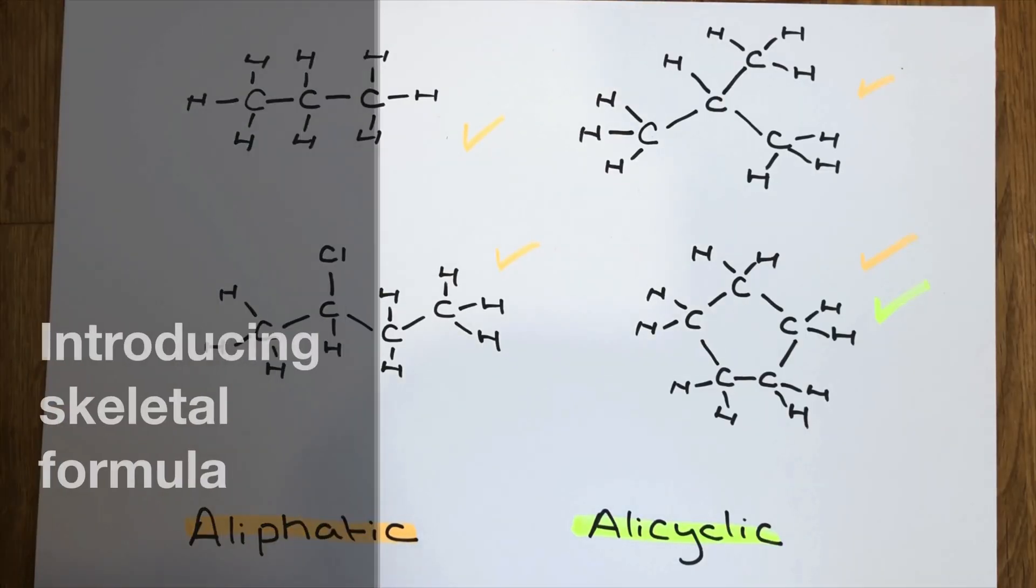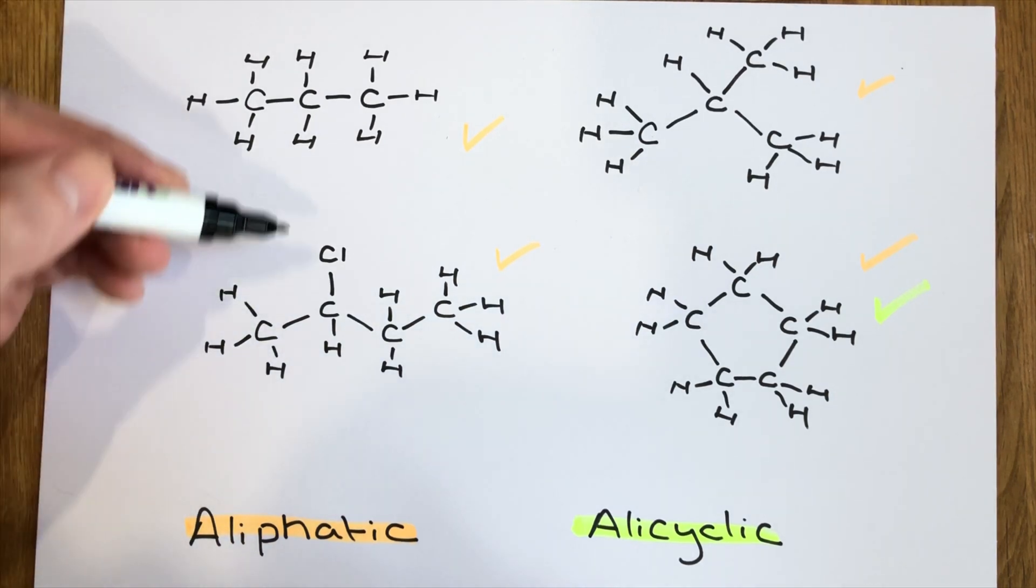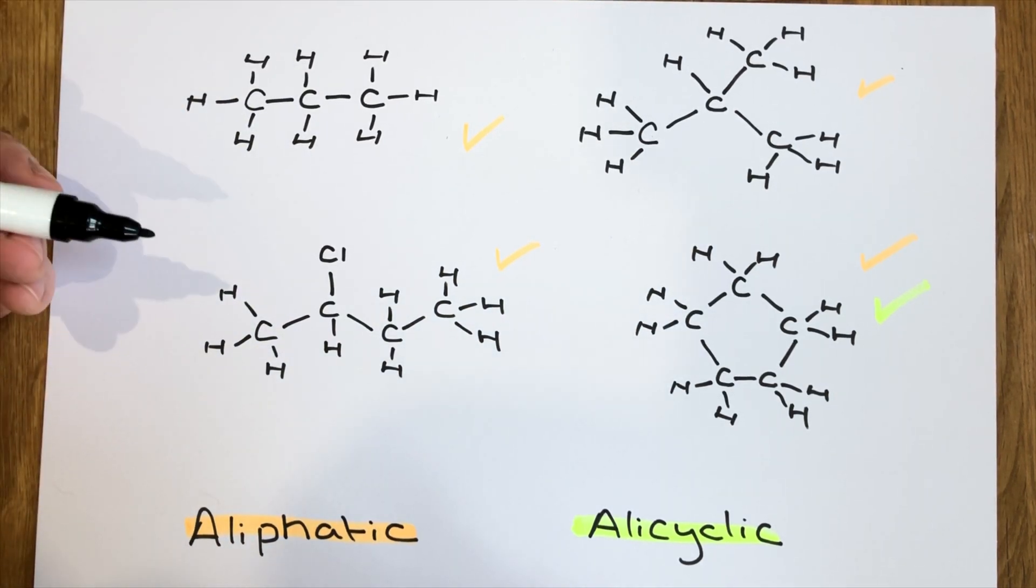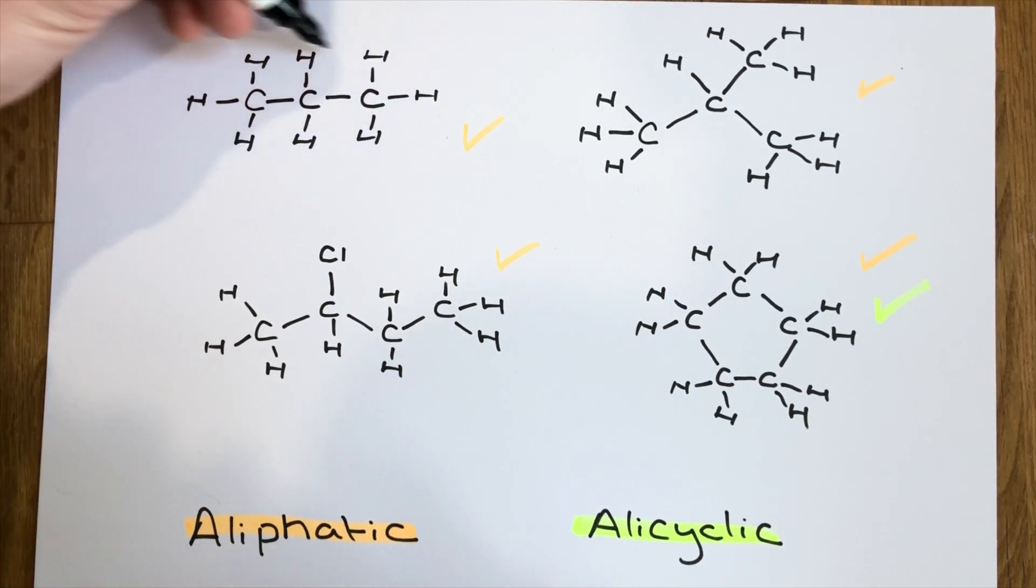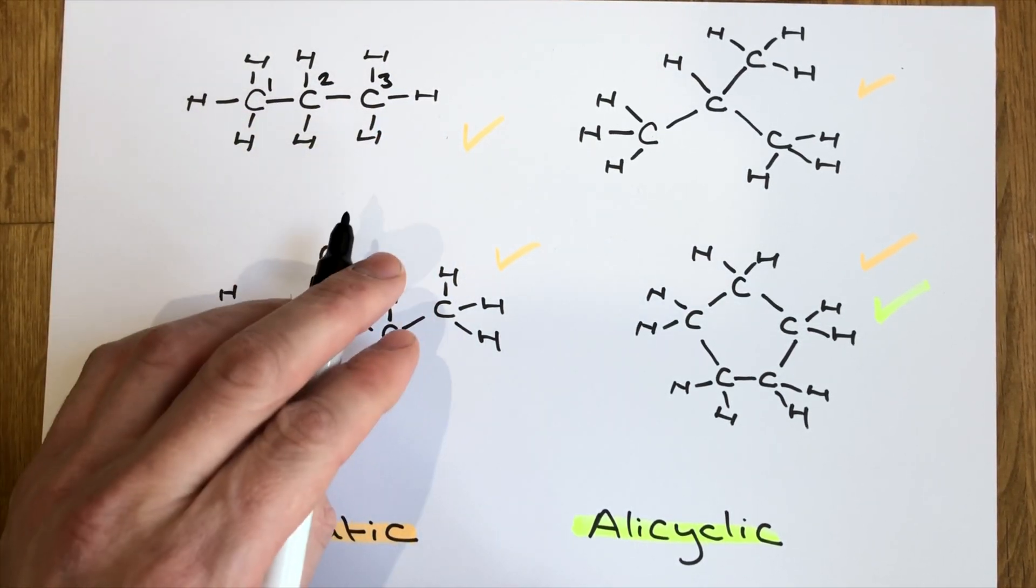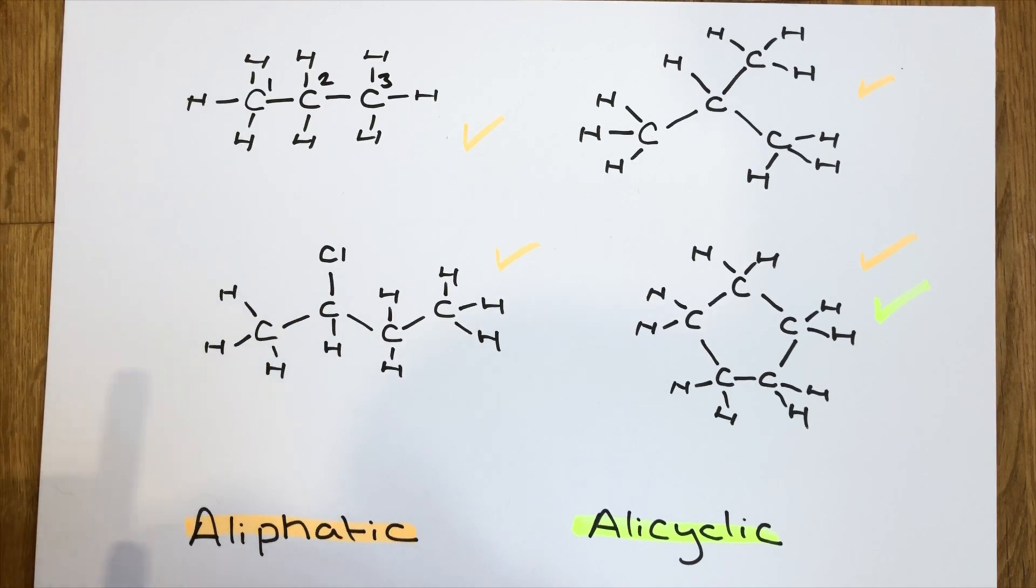The other thing I want to focus on in this video is how we could redraw some of these structures in a slightly easier formulae, and we call this skeletal. So for example here, this molecule is a three carbon chain. And I'm putting these numbers on just to show you the position of these three carbons on the next type of formulae I'm going to use. Now skeletal formulae for this particular structure, which by the way would be propane, is literally just drawn like this. That's it.